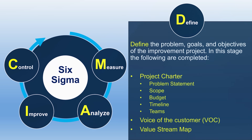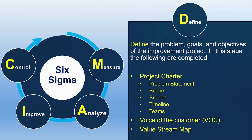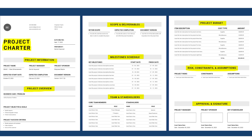Define is where you define your opportunity or the problem. This is an opportunity for improvement, so in the Define stage you determine what that opportunity for improvement exactly is. A few things take place here: we have the creation of the project charter, which is the scope of the project that includes the product, the problem statement, the time frame, any boundaries, team members, and responsibilities. The project charter is really the guide for the project.